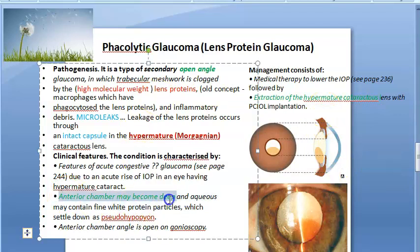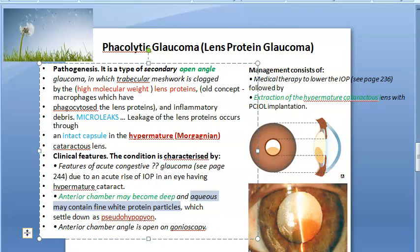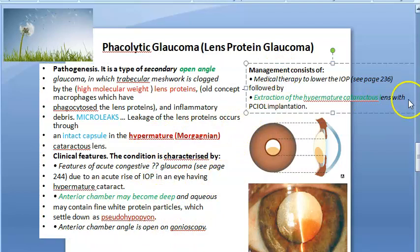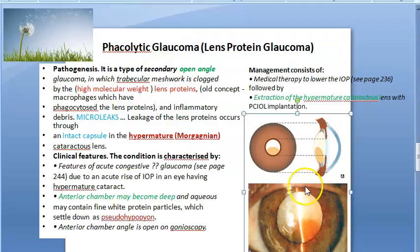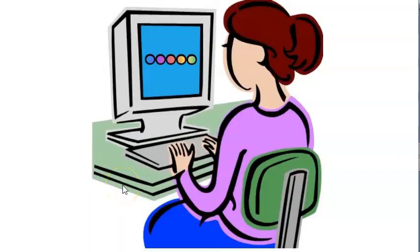In hypermature Morgagnian cataract, the nucleus has dipped inside the liquefied cortex. Proteins start leaking out and block the trabecular meshwork. The anterior chamber is deep since the angle is open. You will see white protein particles in the aqueous, which can settle as pseudo-hypopyon. Management: anti-glaucoma drugs to reduce IOP, then extraction of the hypermature cataract and implantation of an IOL.